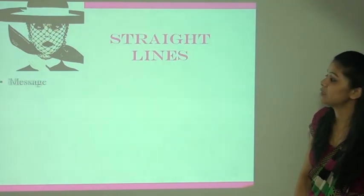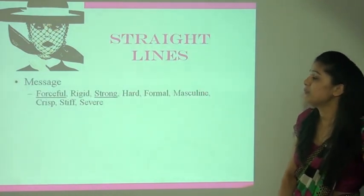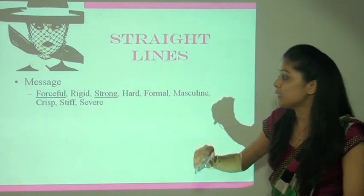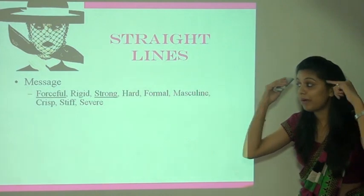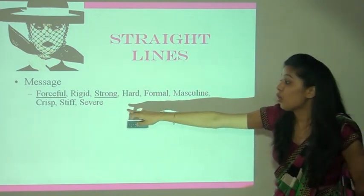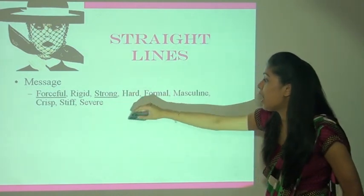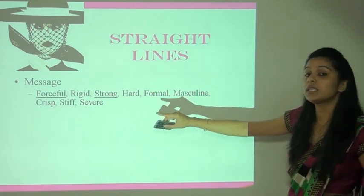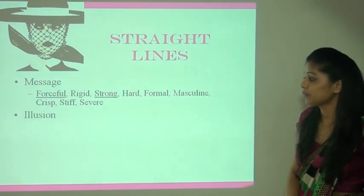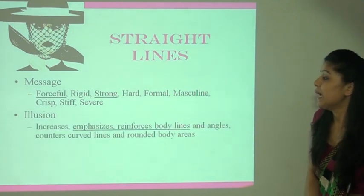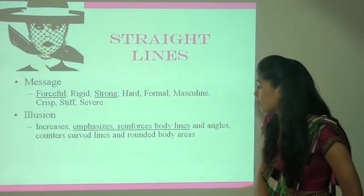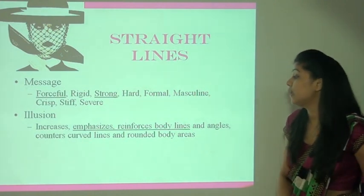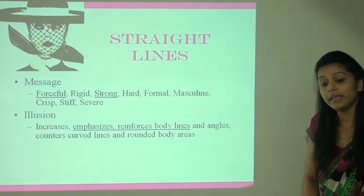Straight lines — message: jab bhi hum kisi bhi garment mein straight line dekhte hain, ek dam se jo message hamare mind mein aata hai — strongness, rigid, forceful, hard, formal, masculine, crisp, stiff, severe. Illusion: increases, emphasizes, and reinforces body lines and angles; counters curved lines and rounded body areas.